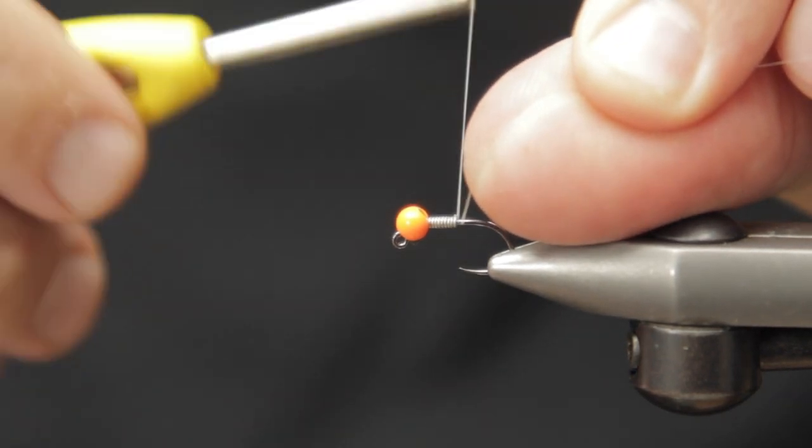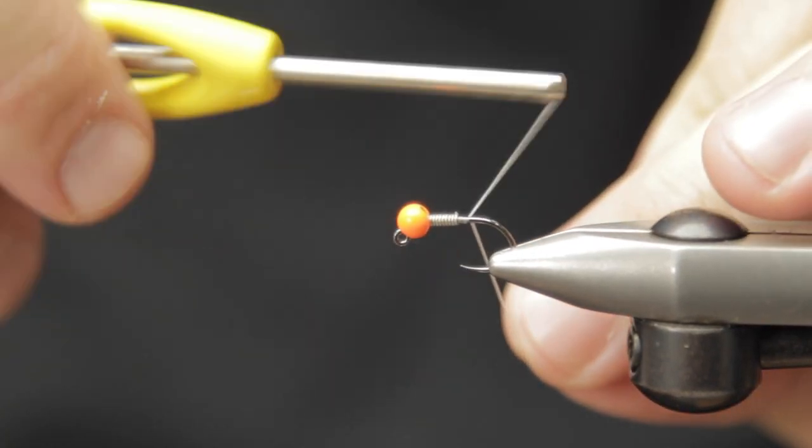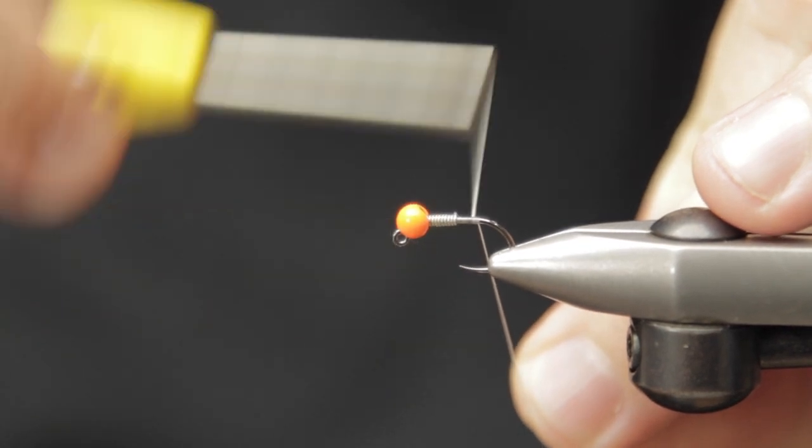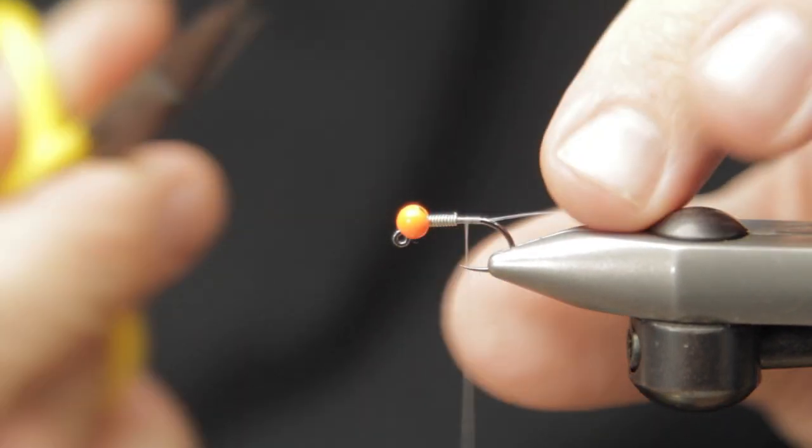I'm going to start our Veevus 50 denier behind the lead wire, taking it to the beginning of the turn of the hook. Trim off the excess.